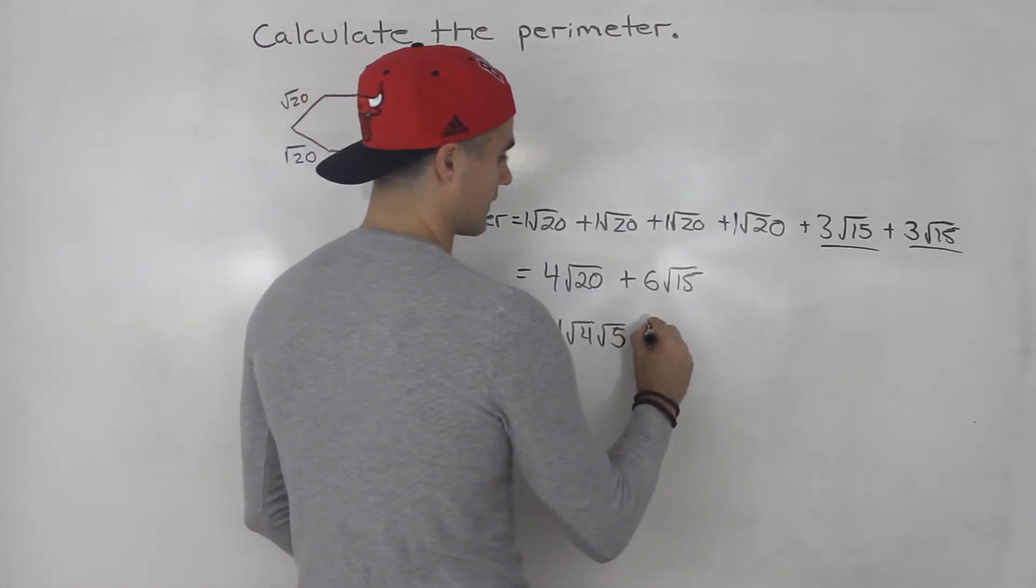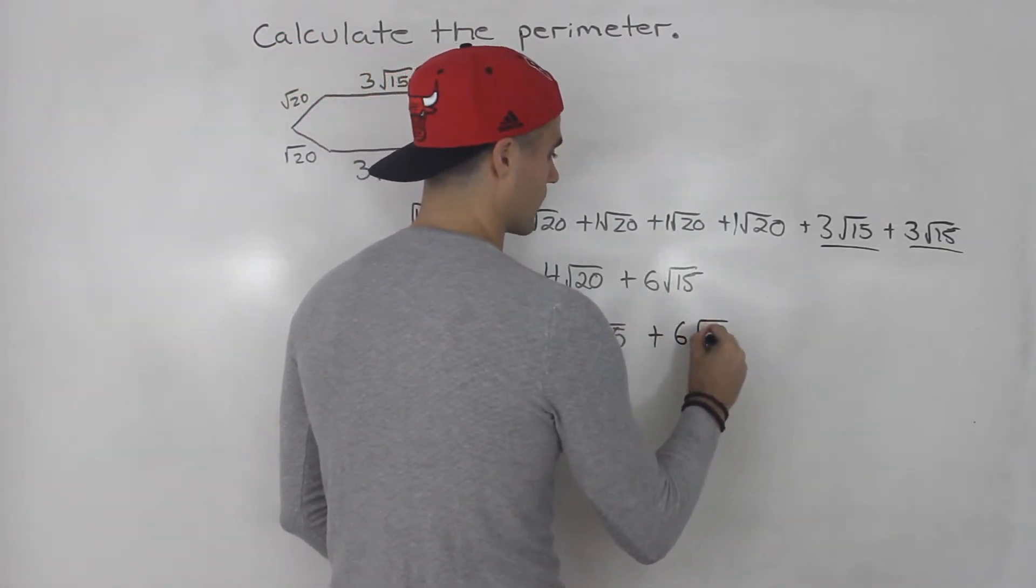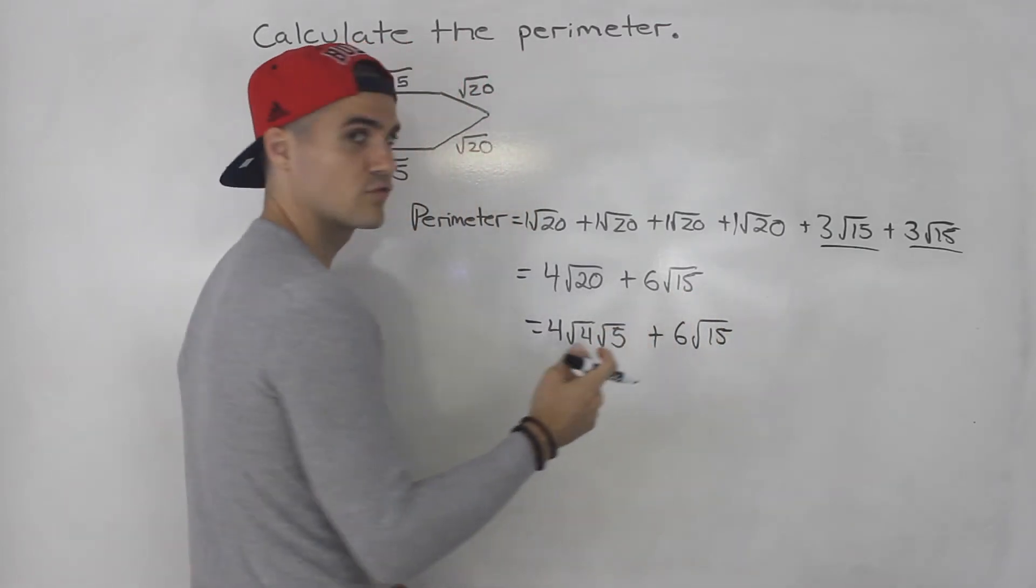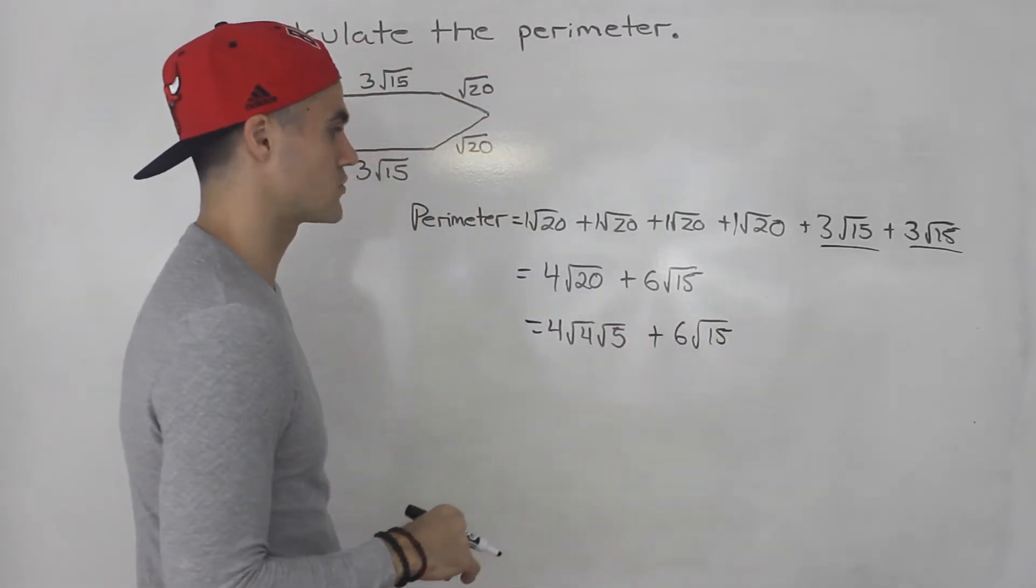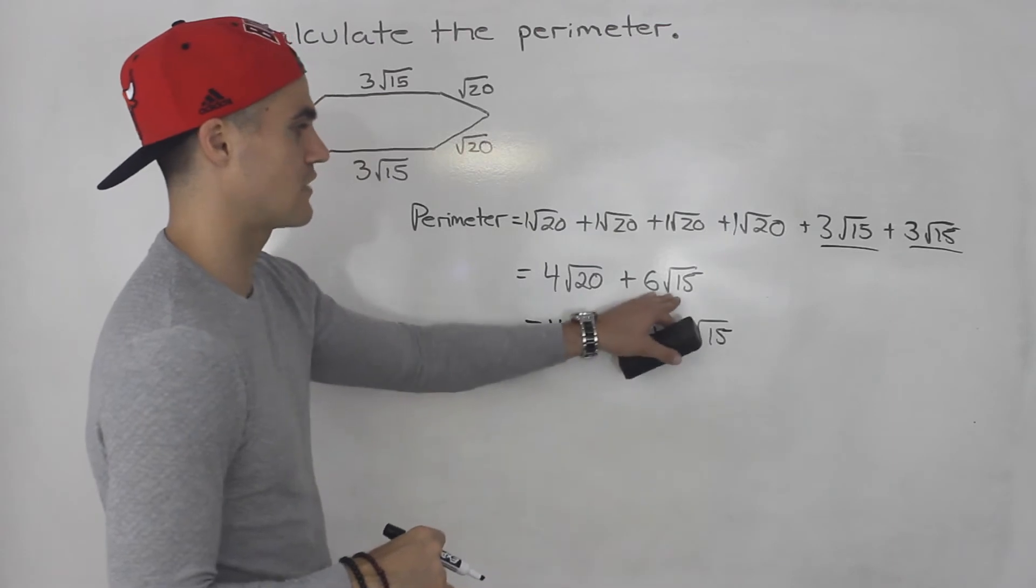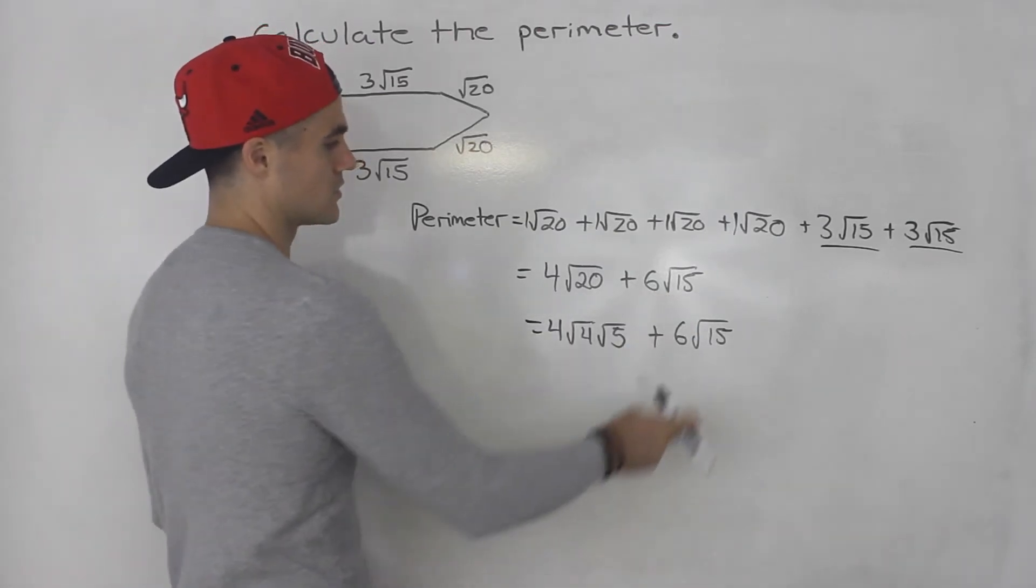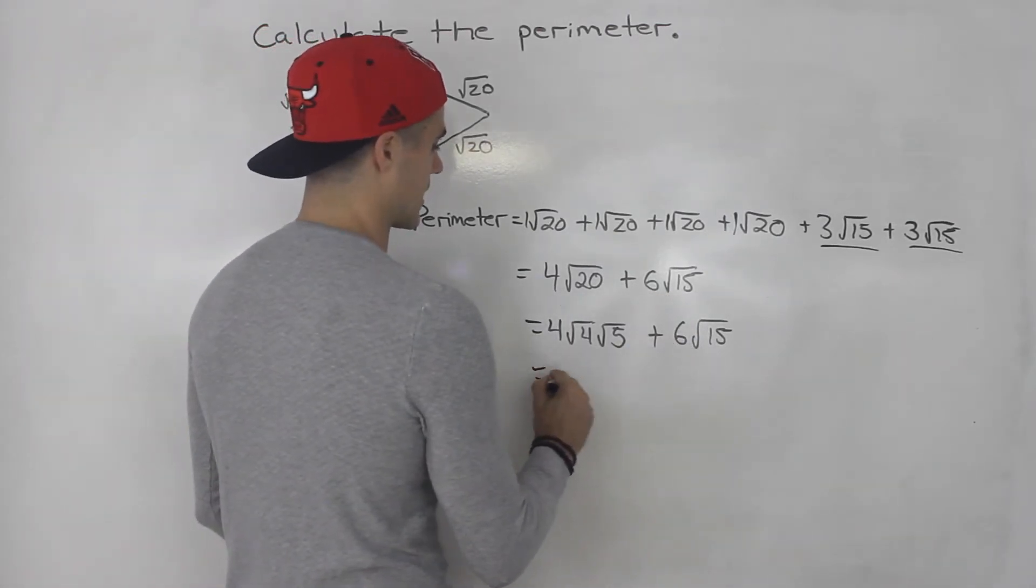Root 15 can't break that down any further. Right? Root three, root five, none of those square roots smoothly. So we can't divide 15 by a rootable number. So root 15 is as simplified as it gets.